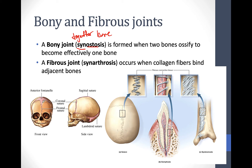An example of a bony joint would be the frontal bone. In the infant, these are two separate bones, but in an adult they become fused together to the point where you can't even tell the difference between the two bones — it's essentially one bone.